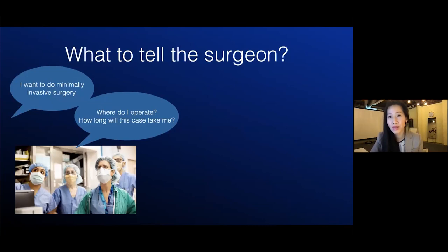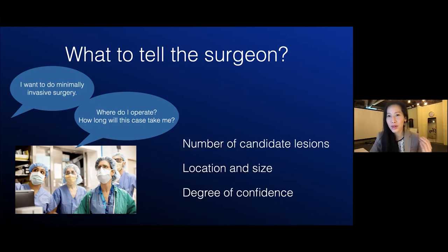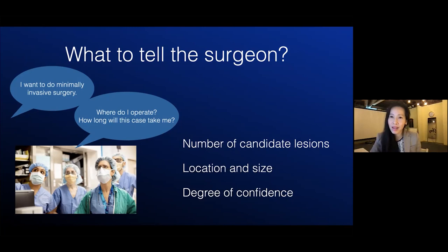To end this section, I want to emphasize what the surgeon wants to know from us. They want to do minimally invasive surgery, so they're asking: where do I need to operate, and how long is this case going to take? We need to tell them the number of glands — if there's just one, they can do minimally invasive surgery. We need to tell them the location, which part of the neck, and approximately what size the lesion will be. Finally, it's really important to tell them how confident you are, because if confidence is low, there are other options for parathyroid imaging beyond 4DCT and they may do additional tests. Next section is on my interpretation process.